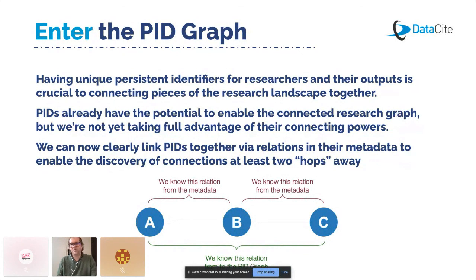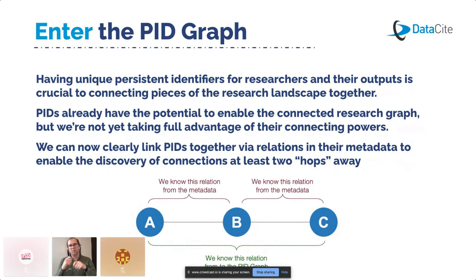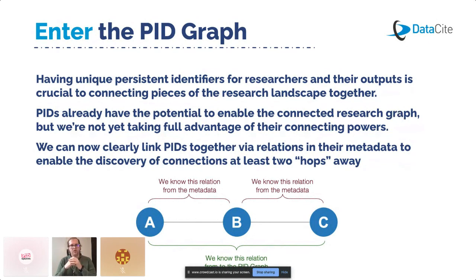PIDs already had the potential to make these connections, but we haven't fully taken advantage of this. We know that an individual published a paper because that is in the metadata. But by building this into a graph — the PID graph — we've enabled the discovery of connections more than two hops away. We can identify that this person published this paper, that used this dataset, funded by this institution, generated with these protocols and software.